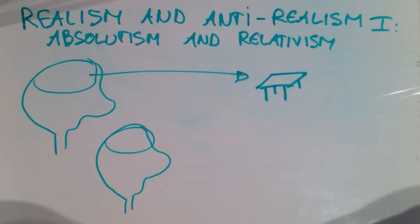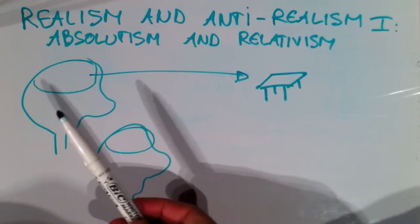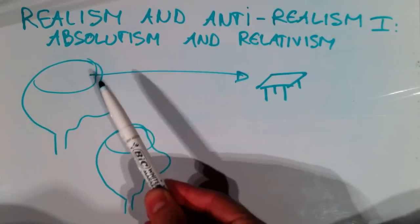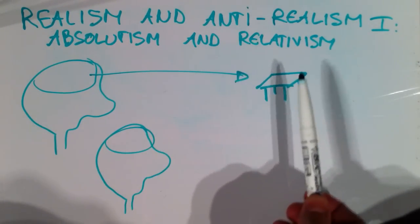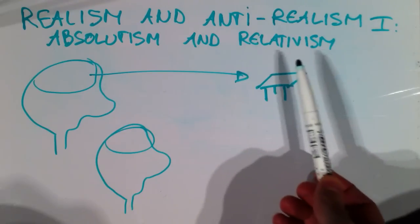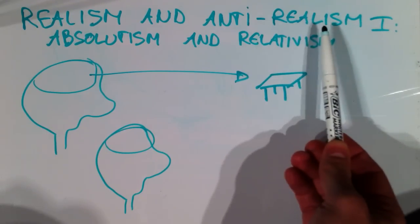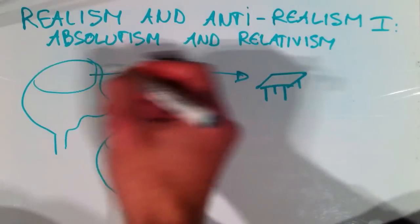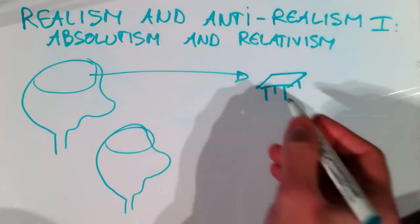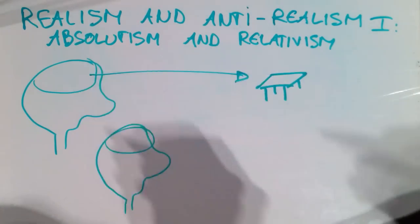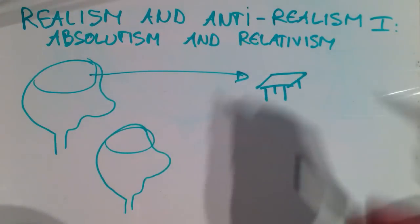What is realism about? Let's take a look at our picture, we've done it many times now. This guy, he's our knower. He tries to know something about reality here, and this must ring a bell — this must have something to do with realism, and yes it does. So with his thinking, or with his mind, he tries to access reality. He tries to gather, acquire knowledge of reality.